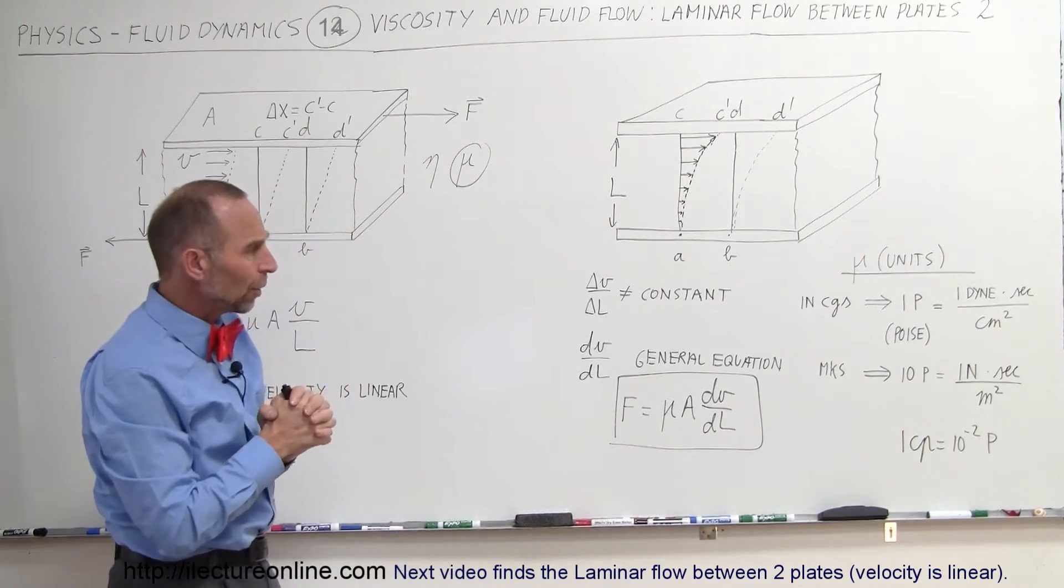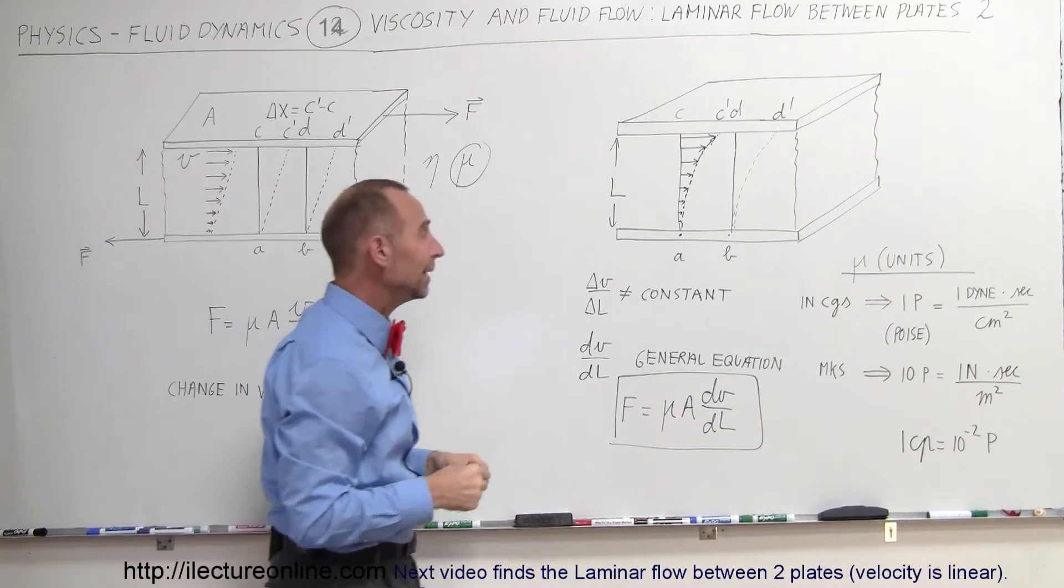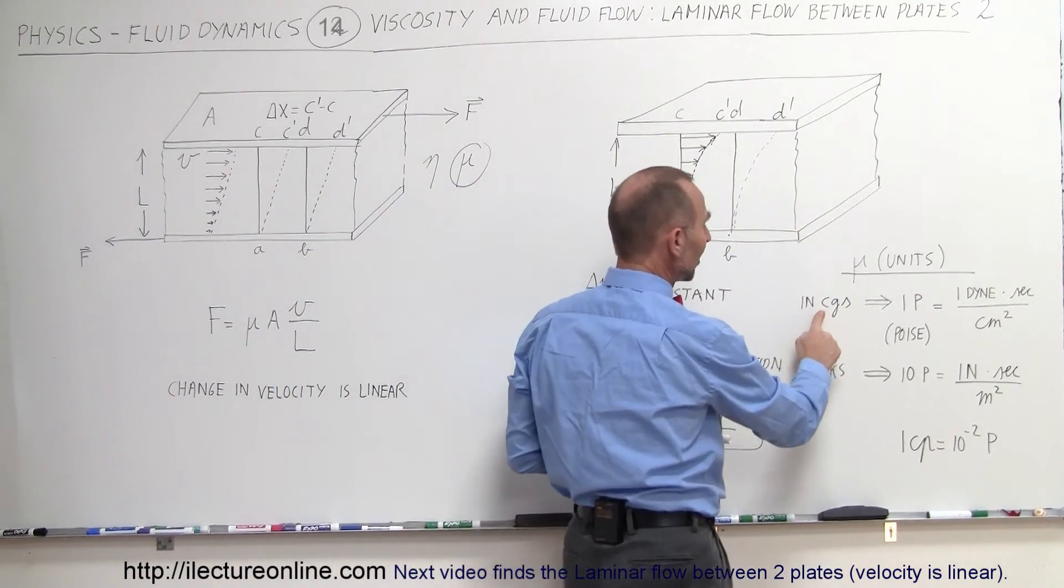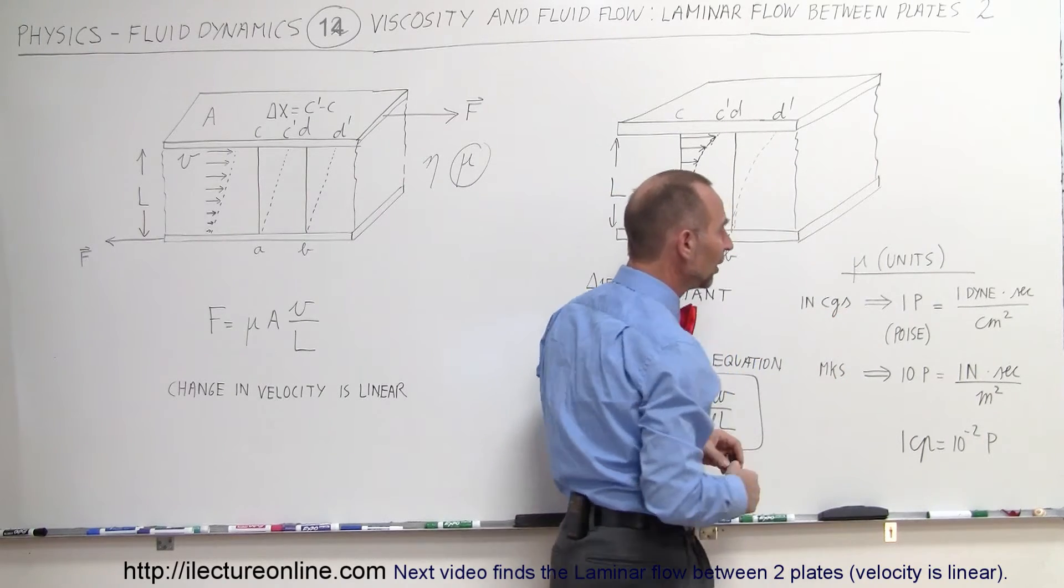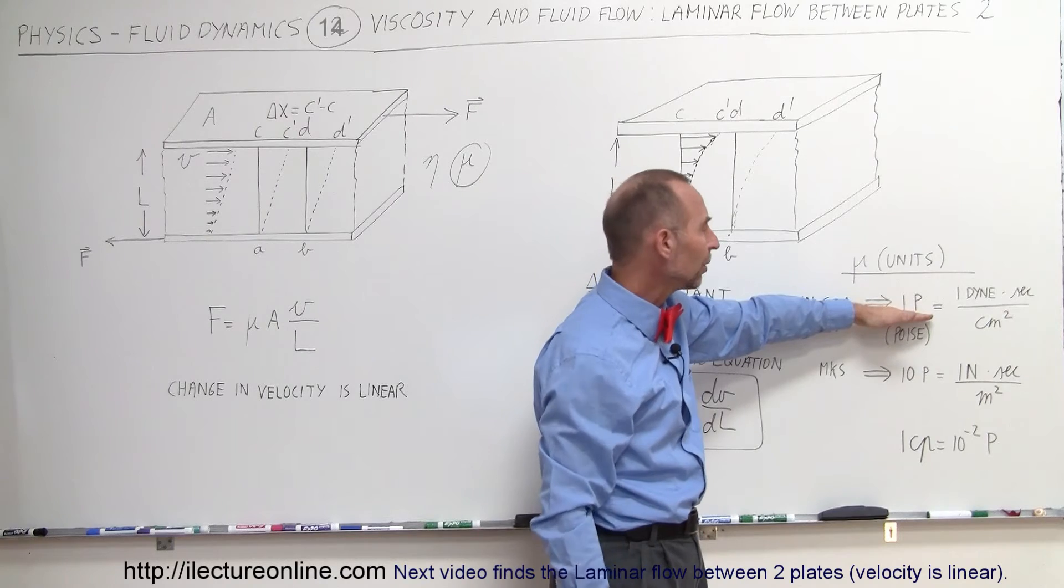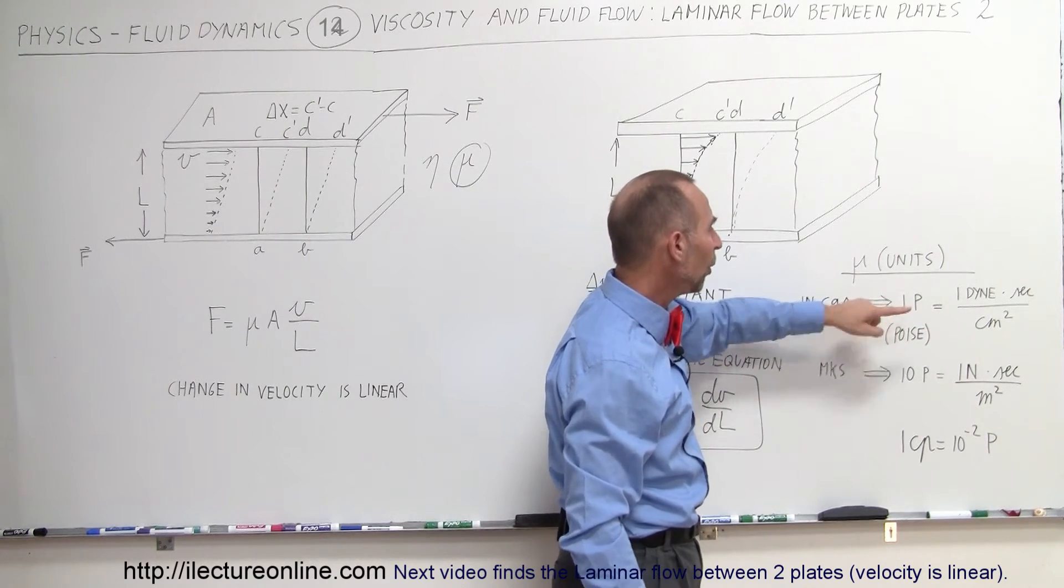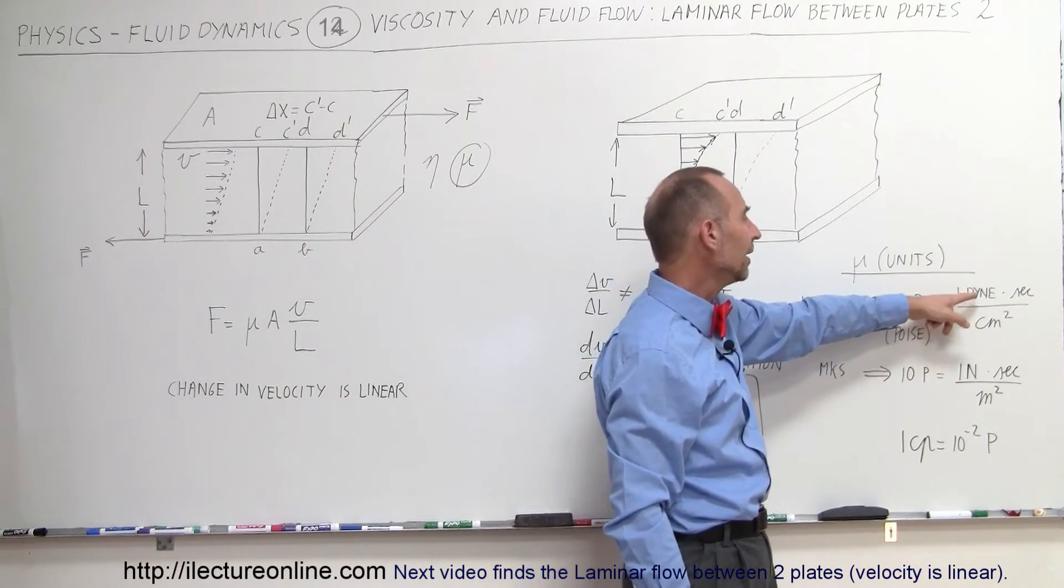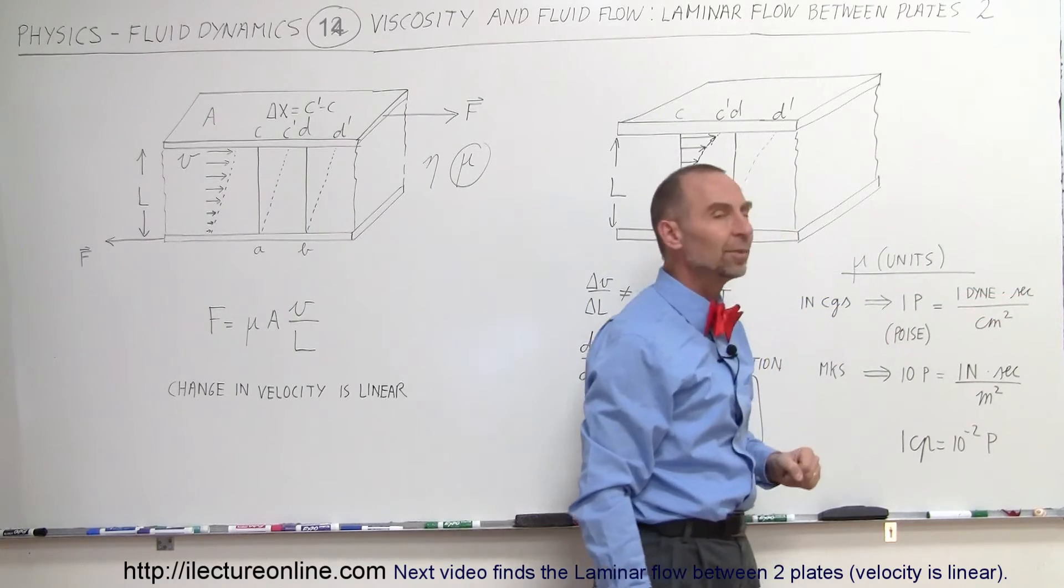Now I also want to talk a little bit about the units of viscosity. In CGS units that means centimeters, grams and seconds, we have a unit called poise, named after Poiseuille, one of the famous physicists. A poise is defined as a dyne times seconds divided by centimeters squared.